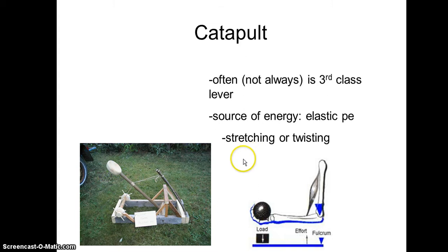The source of energy for a catapult is going to be some sort of elastic potential energy. It could be something that's stretched like this string, or sometimes a rope or something will be twisted to provide that elasticity.